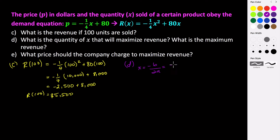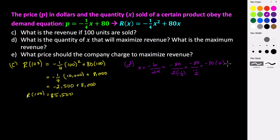B is 80, so we have negative 80 over 2 times A, which is negative one-fourth. That gives us negative 80 divided by negative one-half. When you divide by a fraction, we multiply by the reciprocal, so negative 80 times negative 2, which gives us 160. In order to maximize our revenue, we need to sell 160 units of this item.